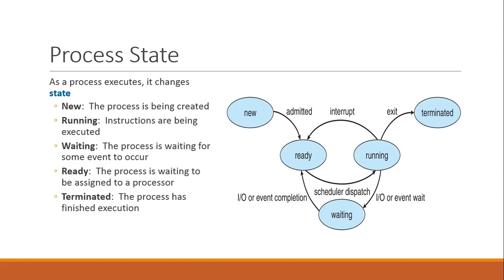Then there is a ready state. Ready state is defined when a process is waiting to be assigned to a processor. That is, the process is in main memory, however it is not under execution — it is waiting for the processor. The processor might be busy at that time with some other process, and our process is waiting for the processor to become free and then start executing this process. Then there is a terminated state, which represents when the process has finished its execution.